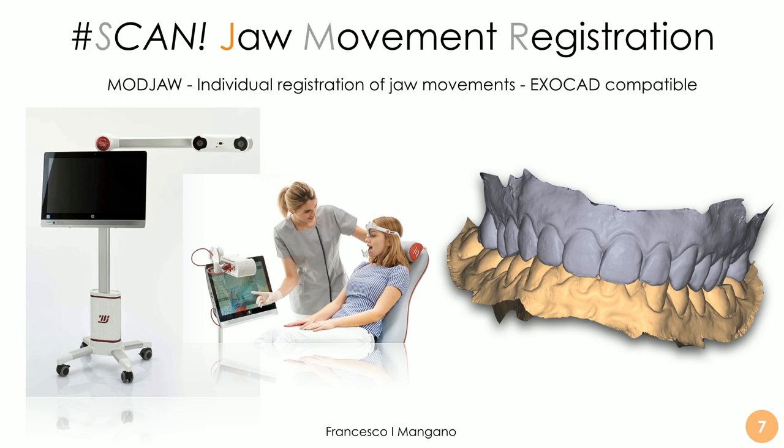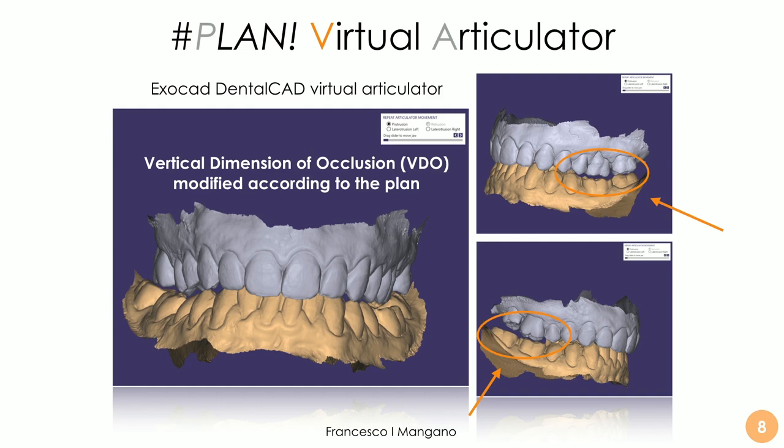With a machine like the Mojo you can register the individual jaw movements, and these are exocad-compatible — you can export these movements directly into exocad so the dental technician can plan in a virtual dental articulator with all the articulator settings and all mandibular movements according to the real movements of the patient. It's really the fourth dimension in prosthodontics, gnathology, and orthodontics.